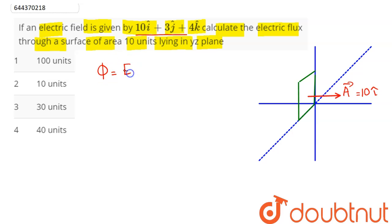So the flux here can be written as E dot A, since electric field is constant. So this comes as E dot A.